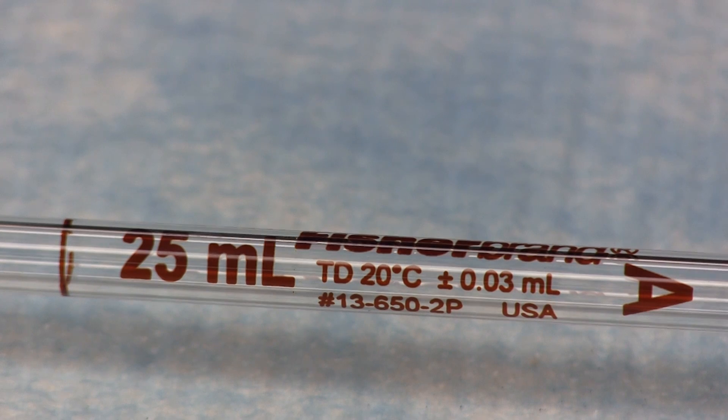For our purposes this means that the precision is two decimal places. The manufacturer calibrates the pipette at a temperature of 20 degrees. So this means that we can transfer a volume of 25.00 milliliters of liquid with this pipette provided that it is used properly.